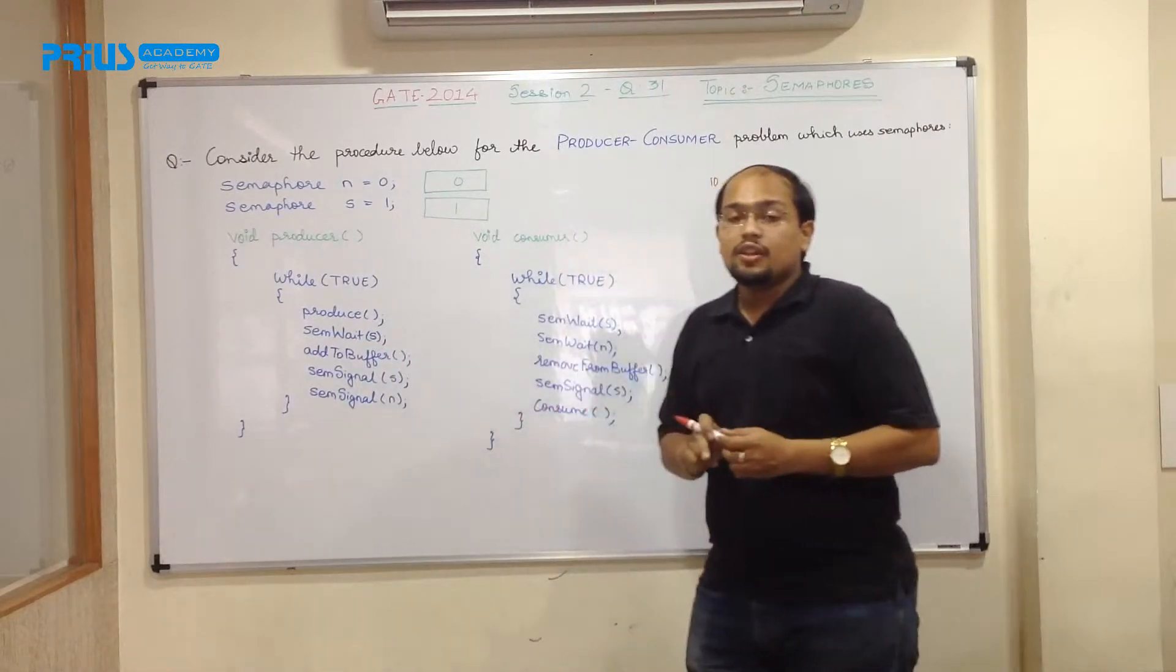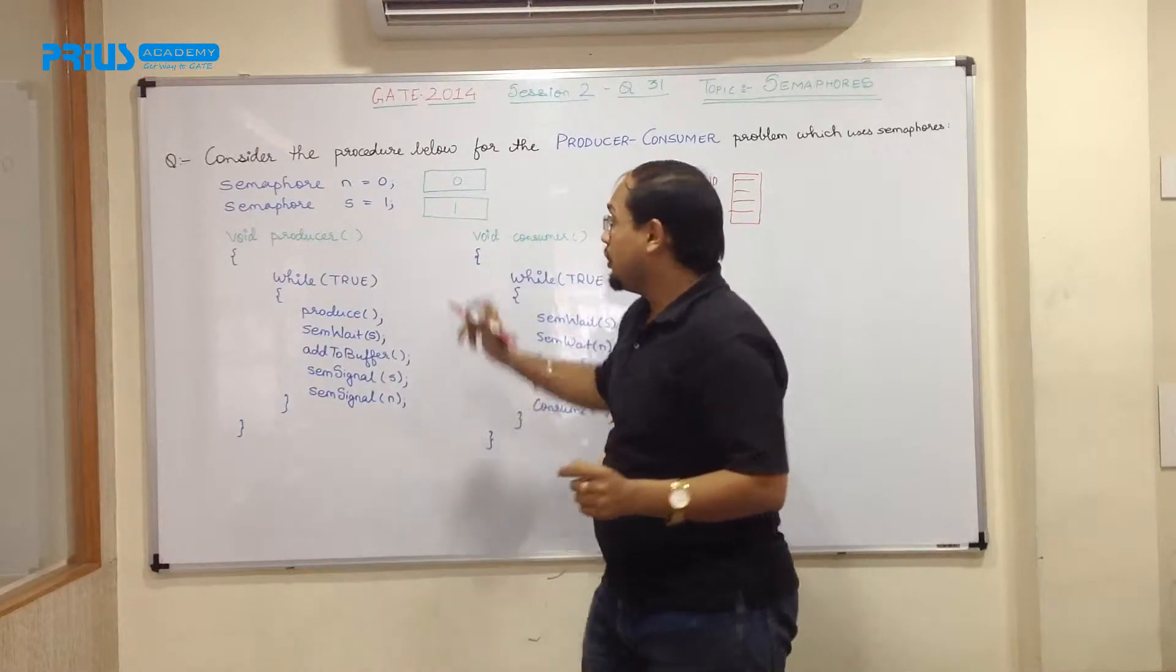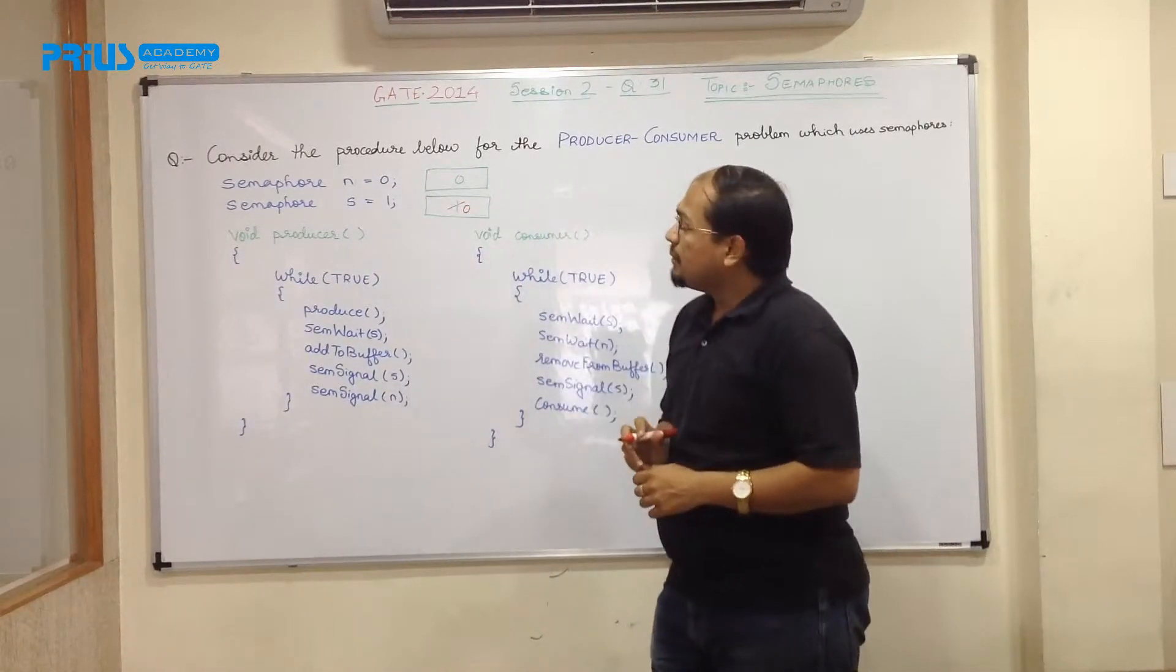Now semaphore wait, what wait indicates? The value of the semaphore is decremented by 1. This is the implementation of the semaphore. So this value will be decremented by 1 and it becomes 0.